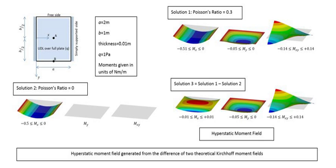The factor of safety is used to calculate a maximum allowable stress: maximum allowable stress equals ultimate tensile strength divided by the factor of safety.